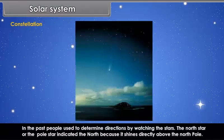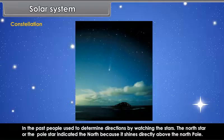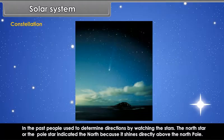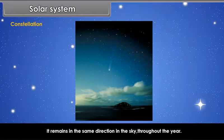In the past, people used to determine directions by watching the stars. The North Star or the Pole Star indicated the North because it shines directly above the North Pole. It remains in the same direction in the sky throughout the year.